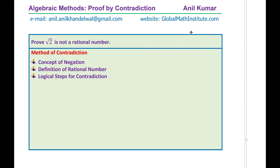This statement is true and we need to prove it. One of the best ways is to use the method of contradiction. Whenever we have to prove a statement to be correct, the method of contradiction is one of the best. We assume that this statement is not correct and therefore its negation should be correct. This step is called the negation of the statement.